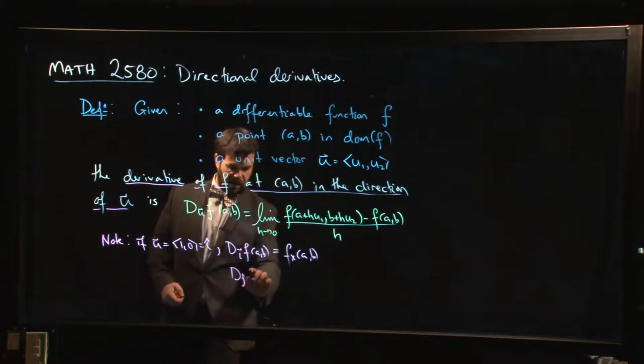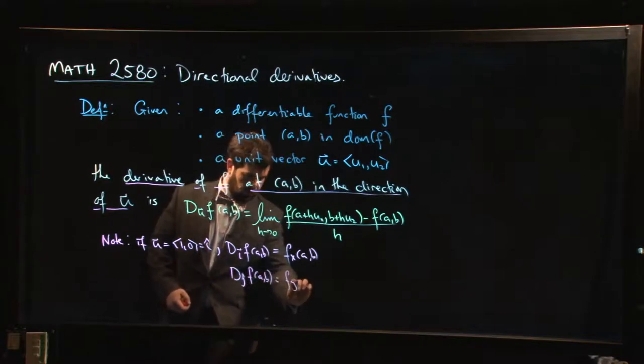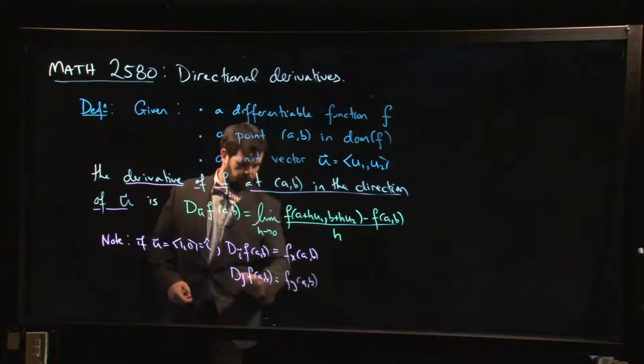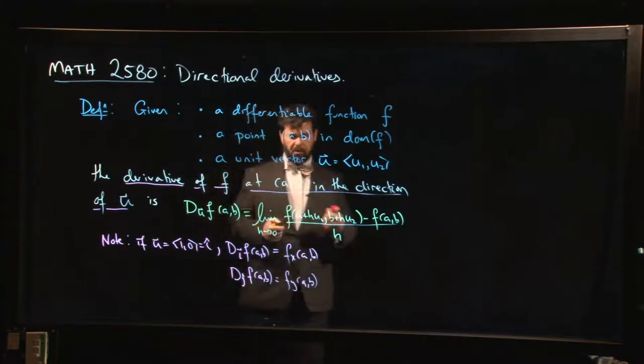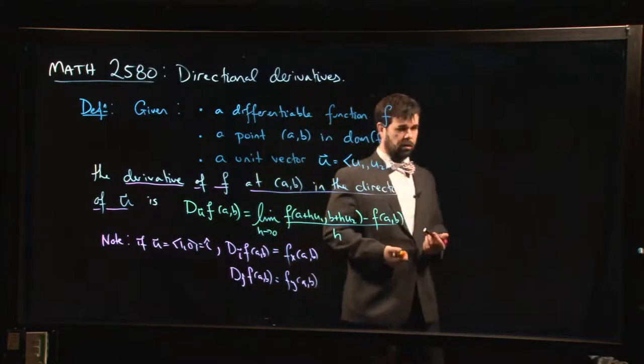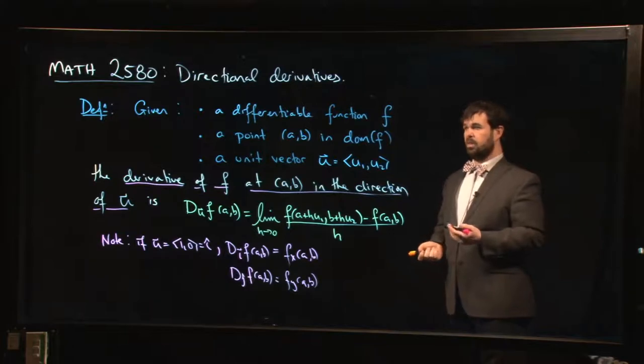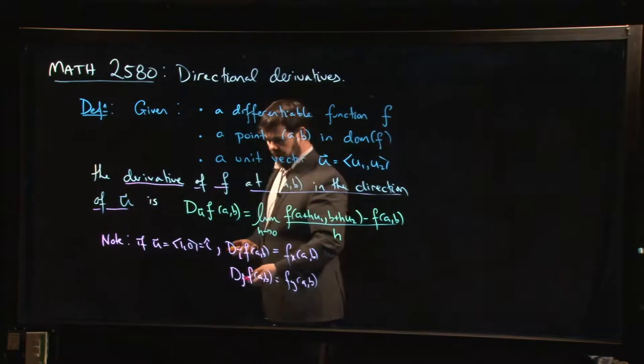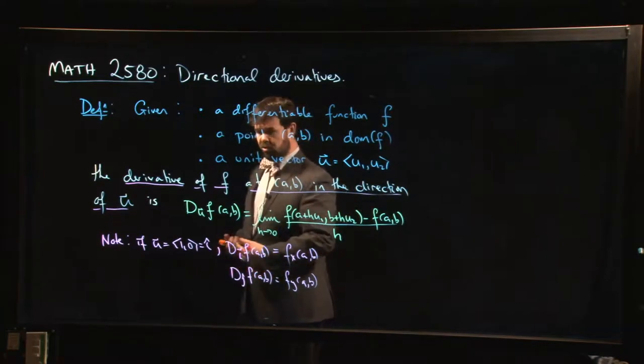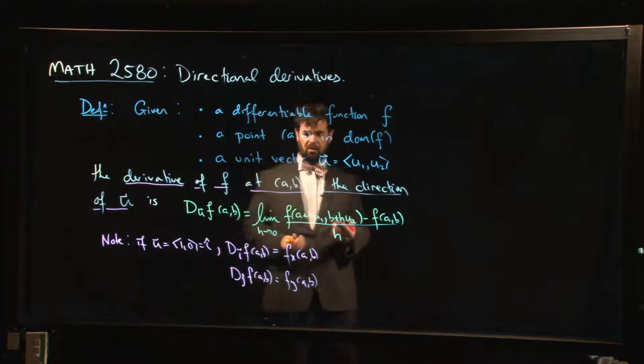Let's actually just call that i, why not. And similarly, if you did the derivative in the direction of j, you get the y derivative. So you should think of the partial derivatives as just being special directional derivatives. The partial derivatives are directional derivatives that are adapted to our coordinate system. The i, j unit vectors are special because they point in the directions for our two coordinates, in the direction that x and y vary.